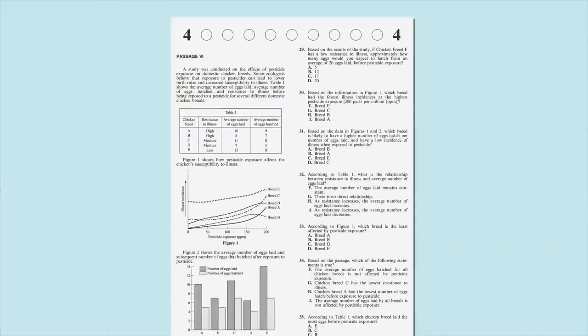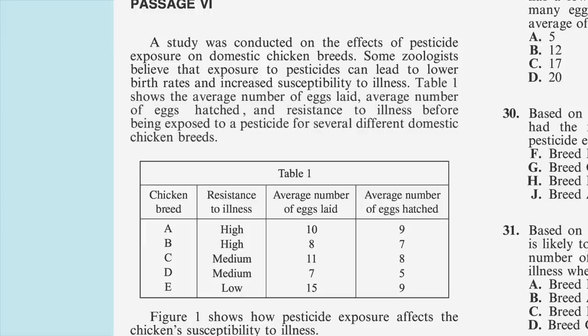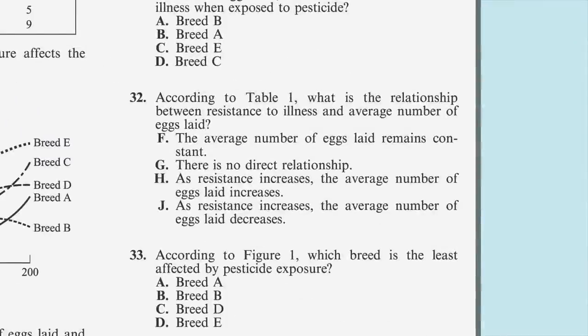In most cases, you'll have to dig a little deeper into the chart or table to get your answer. Here's an example. A study was conducted on the effects of pesticide exposure on domestic chicken breeds. Some zoologists believe that exposure to pesticides can lead to lower birth rates and increased susceptibility to illness. Table 1 shows the average number of eggs laid, average number of eggs hatched, and resistance to illness before being exposed to a pesticide for several different domestic chicken breeds. According to Table 1, what is the relationship between resistance to illness and average number of eggs laid?